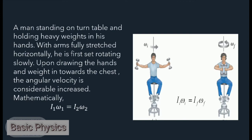Mathematically, I₁ omega₁ equals I₂ omega₂. The product of moment of inertia and angular velocity of the body is constant, according to the law of conservation of angular momentum.